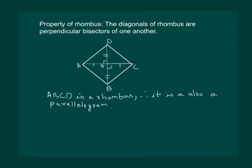So clearly by the properties of parallelogram, AO is equal to OC and DO is equal to OB.